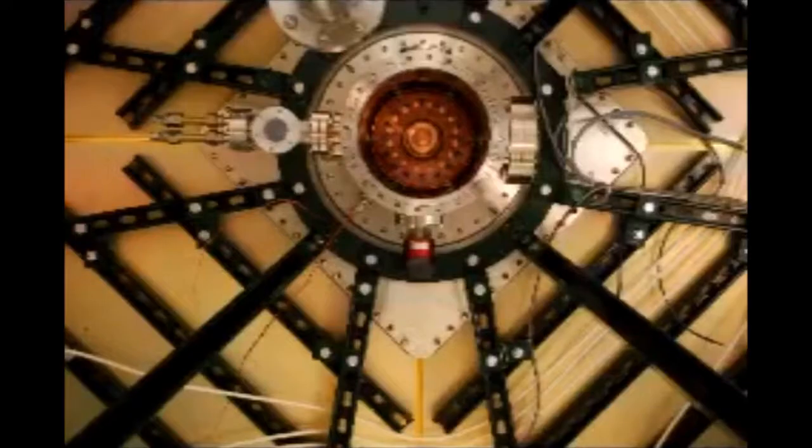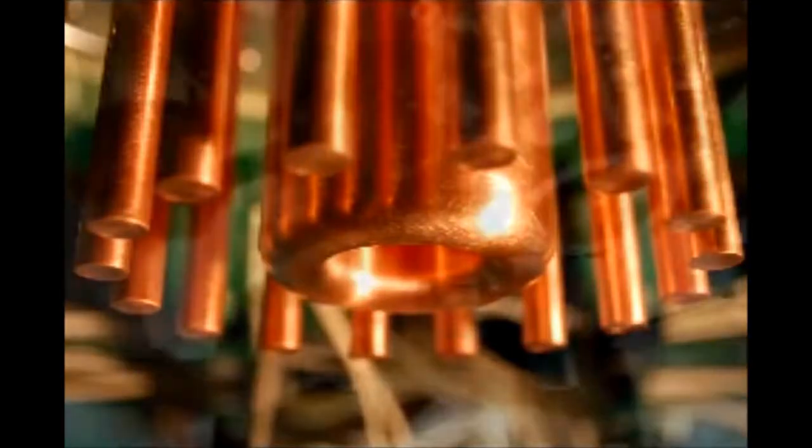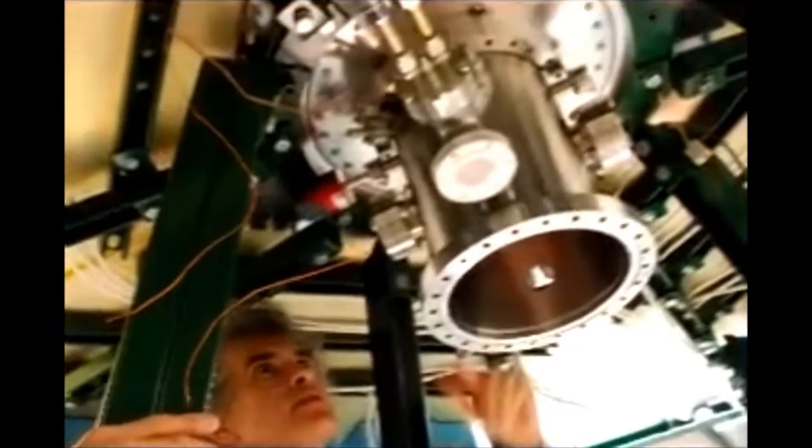At the heart of the dense plasma focus are two cylindrical electrodes only a few inches across, nested inside each other. The electrodes are enclosed in a vacuum chamber with a low pressure gas filling the space between them.